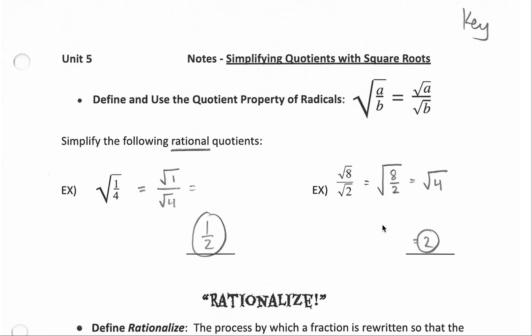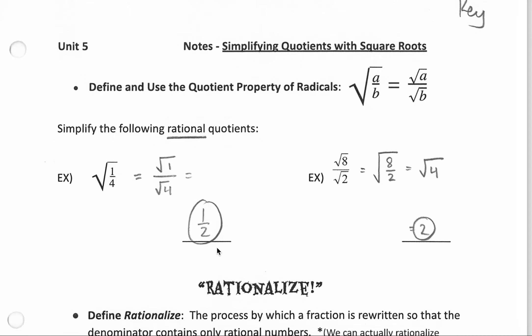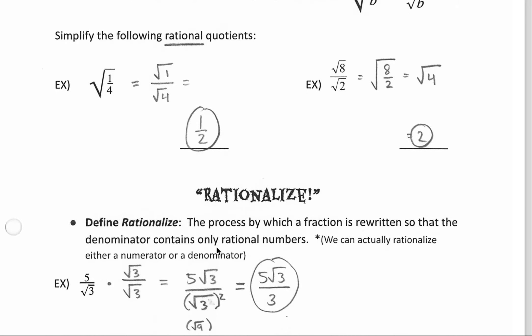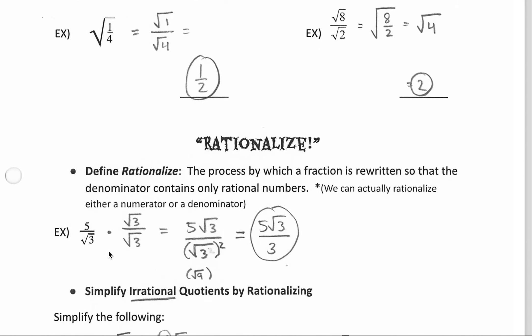So going back and forth between these two forms can help you simplify quotients of radicals. These two examples are rational quotients, meaning that the answer we get is a nice rational number. Let's see what happens if we're dealing with an irrational number though — for example, 5 divided by the square root of 3 is going to be an irrational number, so how can we simplify it and get rid of this radical in the denominator?